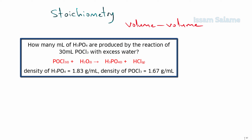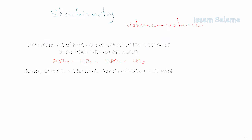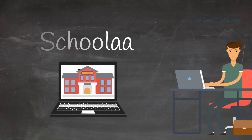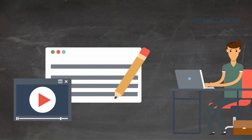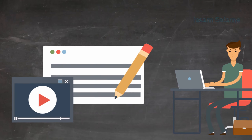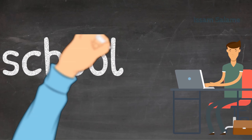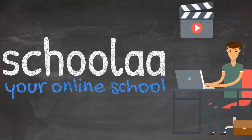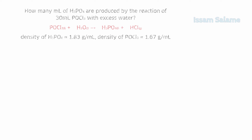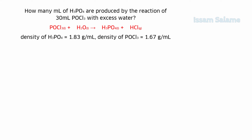As explained in previous videos, we cannot start solving before we balance the chemical equation. To balance this chemical reaction we should multiply HCl by 3, then water by 3, and now the equation is balanced so we can start solving.